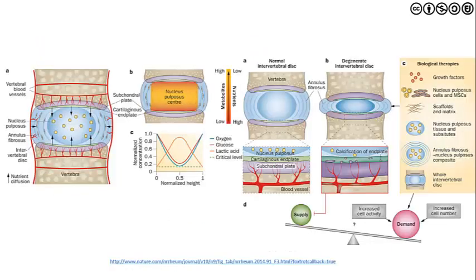A graphic from Nature illustrates the nucleus pulposus, peripheral vascularity, subchondral plate, and metabolite/nutrient dynamics, comparing normal intervertebral discs under pressure with degenerative intervertebral discs. Age is a factor, and biological therapies can help. The key principle is supply and demand: the more we can grade exposure to movement and maintain a healthy overall profile, the better we maintain the integrity of these crucial structures.